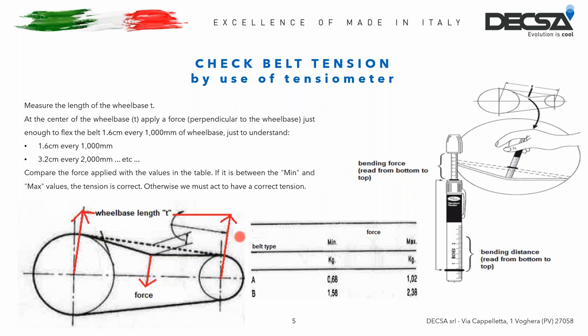At the end of the operation, the tensiometer must give a value between the minimum and maximum; otherwise the belt tension must be changed. I indicate the values for type A and type B belts because they are the most commonly installed models on our units. The belt model is followed by a number indicating its length. These data are very important — if you want to buy new belts from us, we need them to provide you with the correct ones. The best way is always to send us a photo of the nameplate applied on the unit.